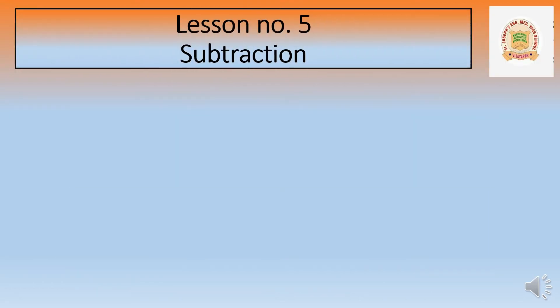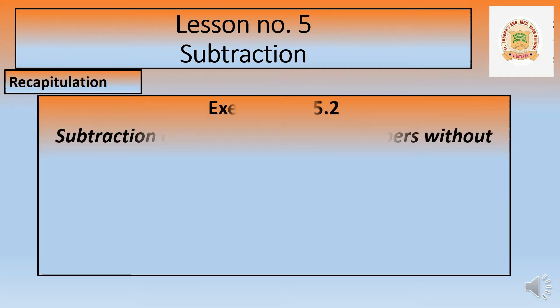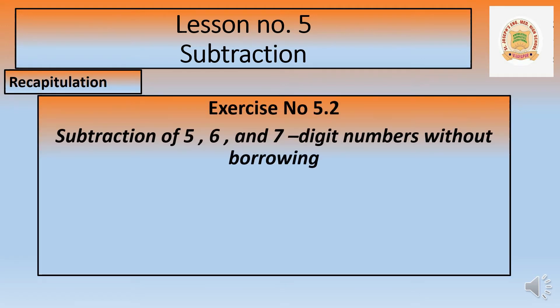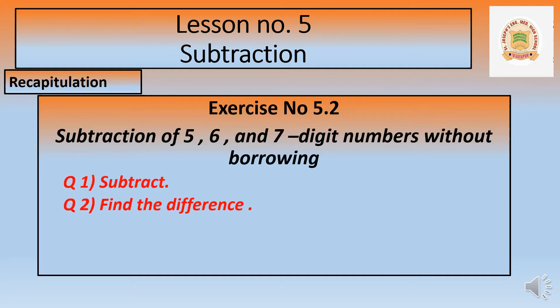In the last two videos we have started lesson number five. We have completed exercise number 5.1 and 5.2. In the previous video, exercise number 5.2 we completed — subtraction of five, six and seven digit numbers without borrowing. We solved two questions: question number one, subtract and find the difference.